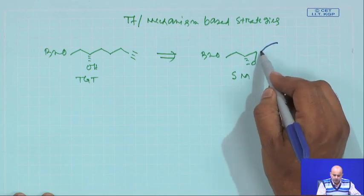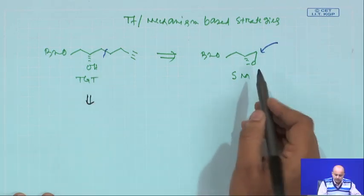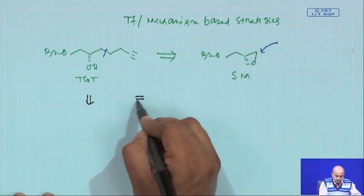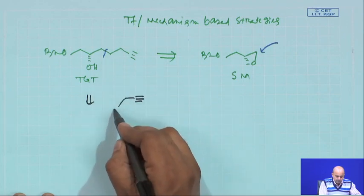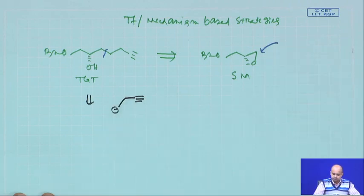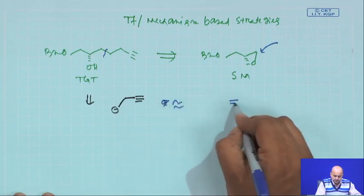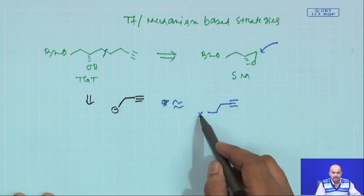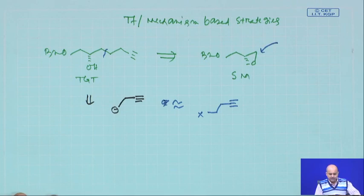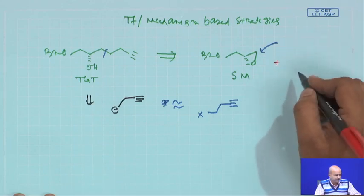If some nucleophile is added here, that will basically give you this product. So, what you can think about is: if you have this epoxide, you can use a CH2-CH2 minus species. If something like CH2-CH2 minus is available in the lab — this compound is basically equivalent to a triple bond, a homopropargyl kind of bromide or alkyl halide. However, this compound is not available in the lab.